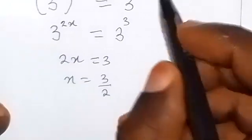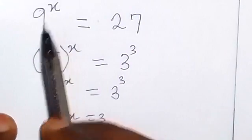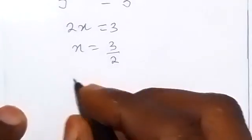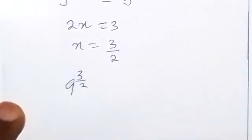And from here we can check from the question given whether it is actually 3 over 2. So we have 9 raised to power, let's see whether 9 raised to power 3 over 2 will give us 27.